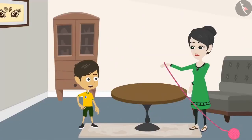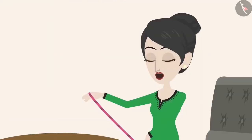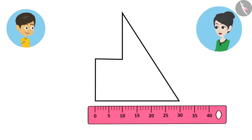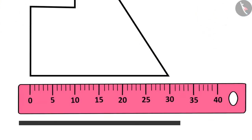Papa told me yesterday that if we have to measure the boundary of a figure, we have to add up their sides. What your father said is correct. The edges of shapes with straight lines can be measured with a scale because the scale is also straight.